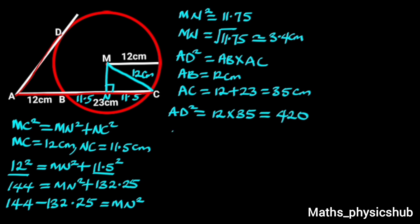To find AD, we take the square root of both sides. Doing so will give us AD equals square root of 420, which is approximately 20.5 centimeters.